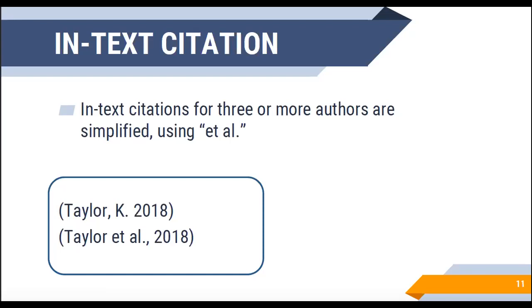If there are three or more authors, we can use the short form 'et al.' after the first author's name. This indicates to the reader that there are more authors, and they can look to your final reference listing to see the remaining ones. This keeps the paper neater rather than writing out a long string of authors, especially if there are upwards of 10 or 12 different authors on a paper.